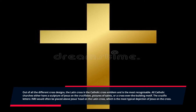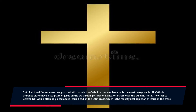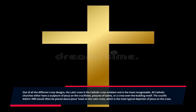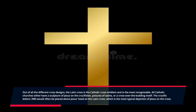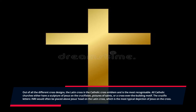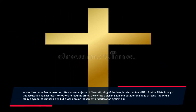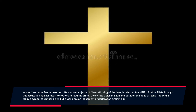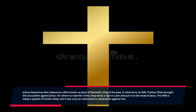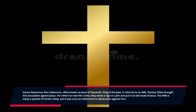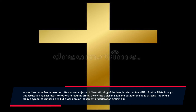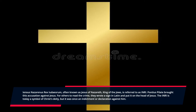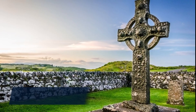Number eight: the Latin Cross. Out of all the different cross designs, the Latin Cross is the most recognizable and serves as the Catholic cross emblem. All Catholic churches either have a sculpture of Jesus on the crucifixion, pictures of saints, or a cross over the building. The letters INRI are often placed above Jesus's head on the Latin Cross. INRI stands for 'Iesus Nazarenus Rex Iudaeorum' — Jesus of Nazareth, King of the Jews — an accusation brought by Pontius Pilate. Today, INRI is a symbol of Christ's deity.